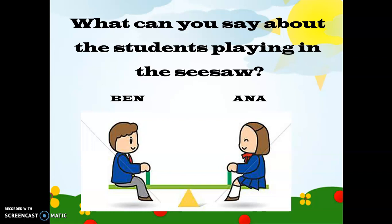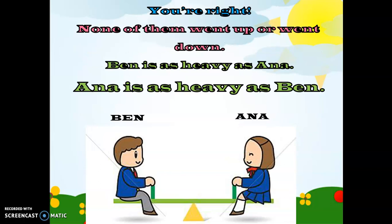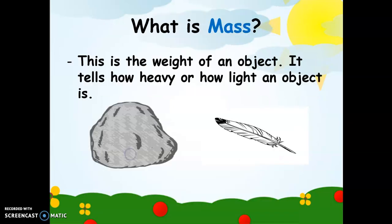Next, what can you say about the students playing on the seesaw — Ben and Anna? You're right, none of them went up or went down. Ben is as heavy as Anna, and Anna is as heavy as Ben, so both of them have the same weight or mass. How did we know? By looking at the seesaw — because it didn't move and stayed in the same direction for both children. Because of that, we were able to find out their mass.